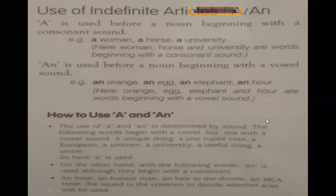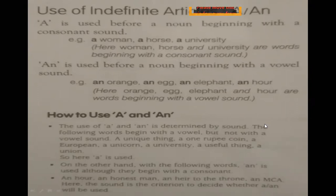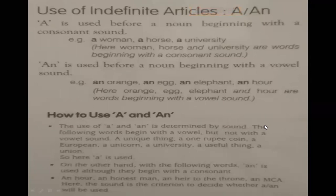AN is used before a noun beginning with a vowel sound. Vowel sounds start with A, E, I, O, U. Examples: an orange, an egg, an elephant, an R — these are words beginning with a vowel sound. The use of A and AN is determined by sound, not by the letter. The following words begin with a vowel letter but not a vowel sound, so they take A: a unique thing, a one-rupee coin, a European, a unicorn, a university, a useful thing.